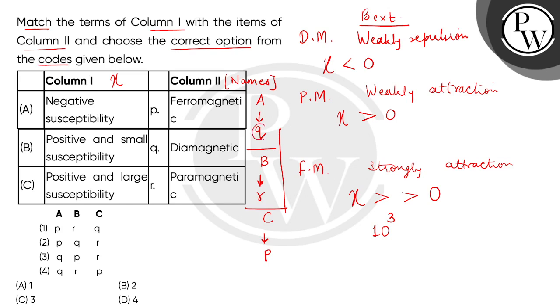The sequence we get is Q, R, P. So according to this, the statement number 4 is correct. So the correct answer is option number D.